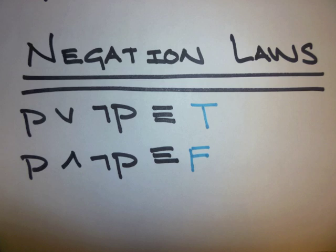The negation laws: P or not P is logically equivalent to true. P and not P is logically equivalent to false.